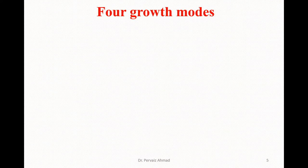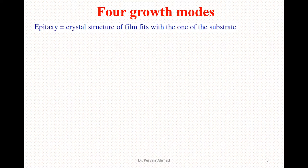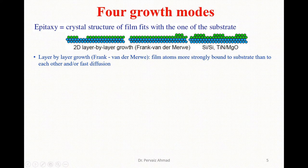There are four broad deposition methods. The first is epitaxy. Epitaxy is basically when the crystal structure of the film fits with that of the substrate. As you can see in the figure, we have a thin layer of a particular material on a substrate. This kind of structure is basically layer-by-layer growth, which we call Frank-van der Merwe growth.